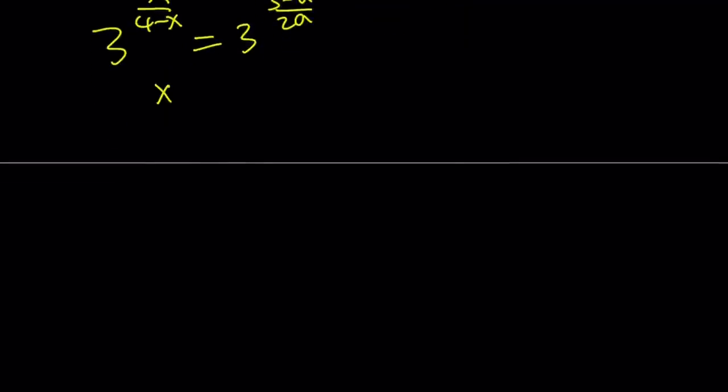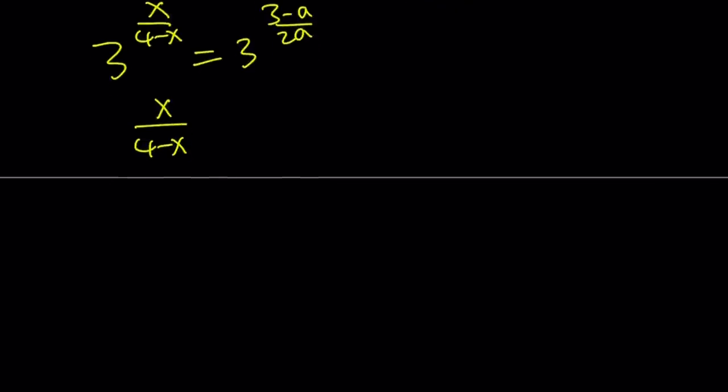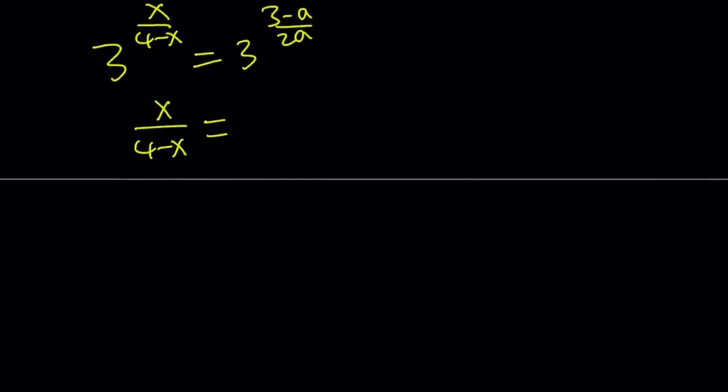So this means X/(4-X) equals (3-A)/(2A). Obviously, all these cases are in question, like A cannot be 0, X cannot be 4, because as you know, it's the log of unrelated numbers, so it can't be an integer, and so forth. I'm kind of skipping all of those details. So now we've got the following.